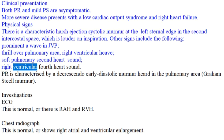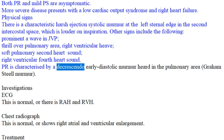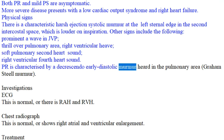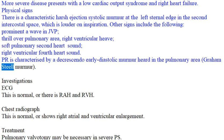A right ventricular fourth heart sound may also be present. PR is characterized by a decrescendo early diastolic murmur heard in the pulmonary area — the Graham Steell murmur.